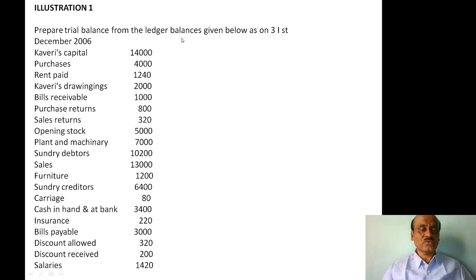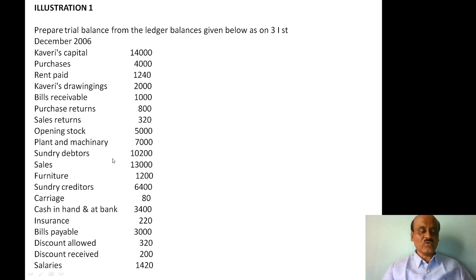As of 31st December 2006, the items are: capital 14,000; purchases 4,000; rent paid 1,240; drawings 2,000; bills receivable 1,000; purchase returns 800; sales returns 320; opening stock 5,000; plant and machinery 7,000; sundry debtors 10,200; sales 13,000; furniture 1,200; sundry creditors 6,400; carriage 80; cash in hand and bank 3,400; insurance 220; bills payable 3,000; discount allowed 320; discount received 200; salaries 1,420.